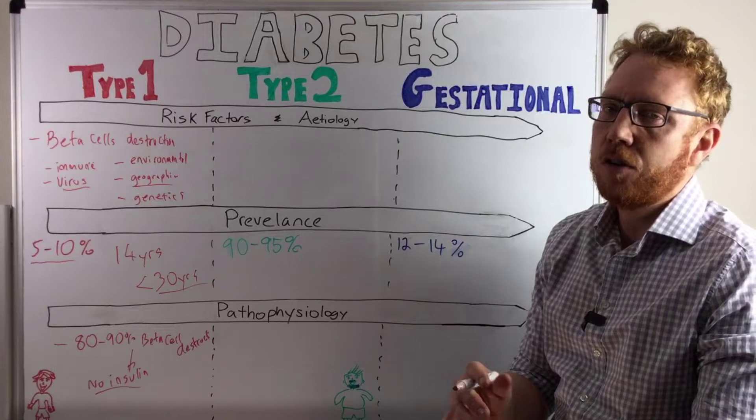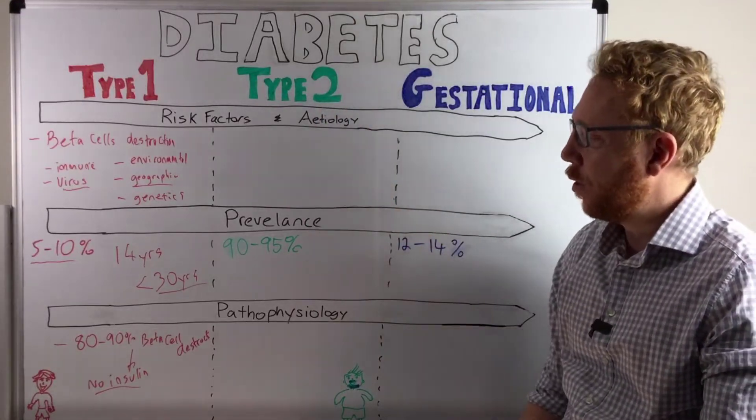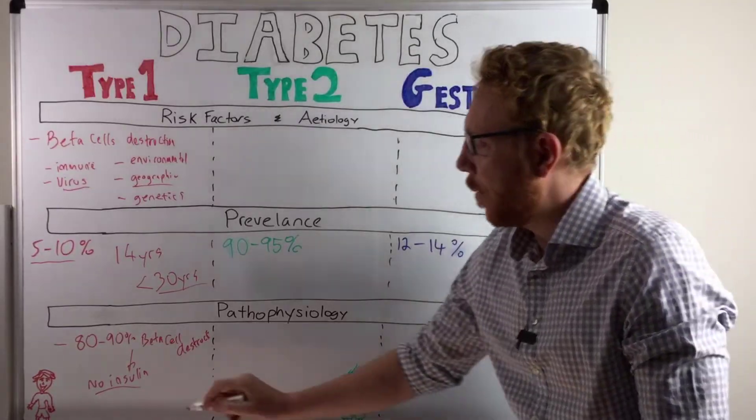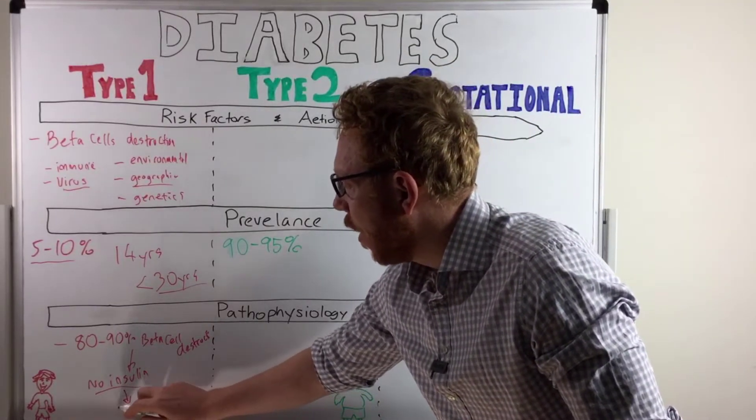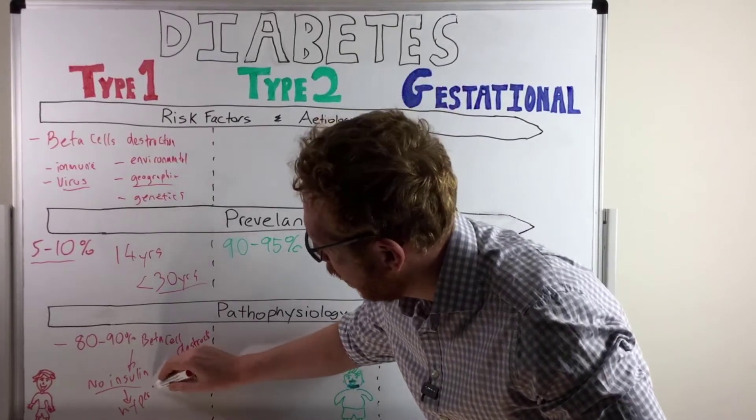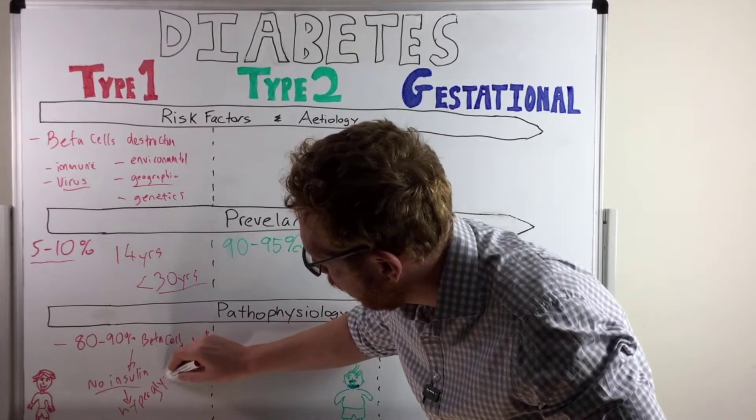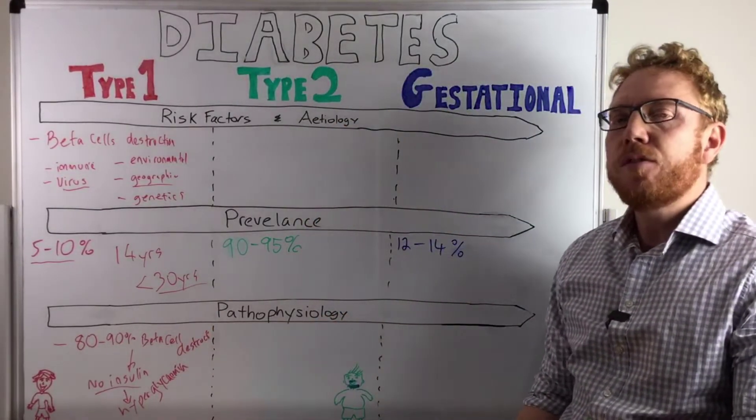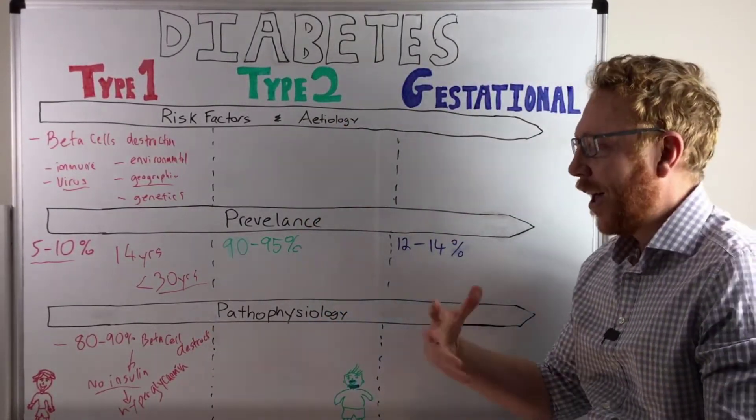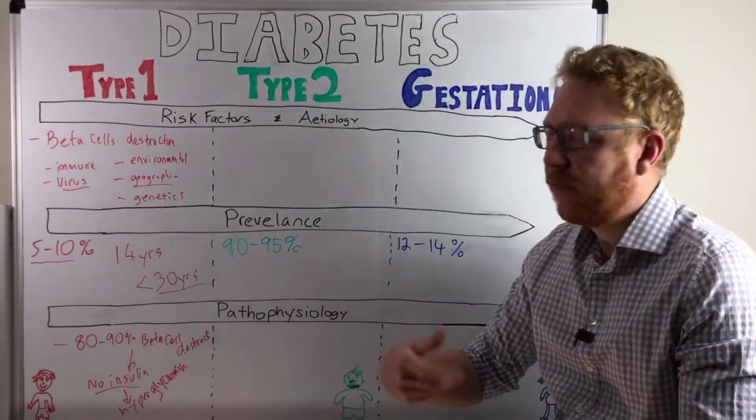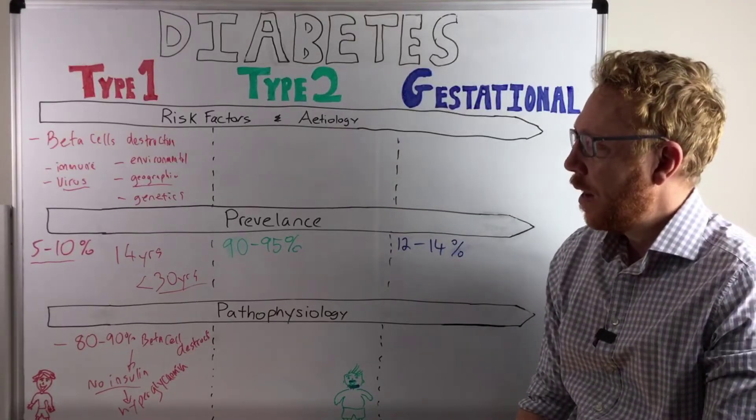I'll explain to you shortly when we do type 2 why that's not the best term. And now, when there's no insulin, essentially what's going to happen is now you have hyperglycemia, meaning high sugar. So now you have high levels of sugar in your blood. That's usually one of the first signs that you'll see if you were to take the blood of this individual.